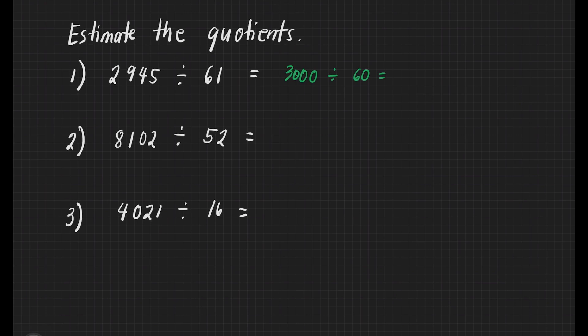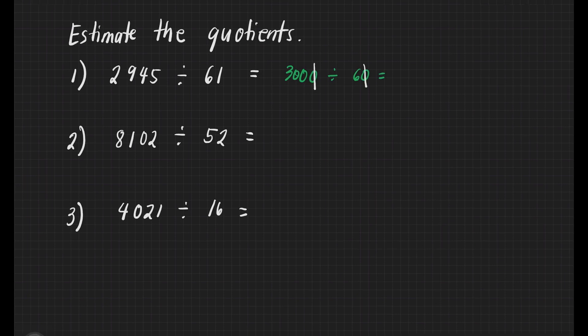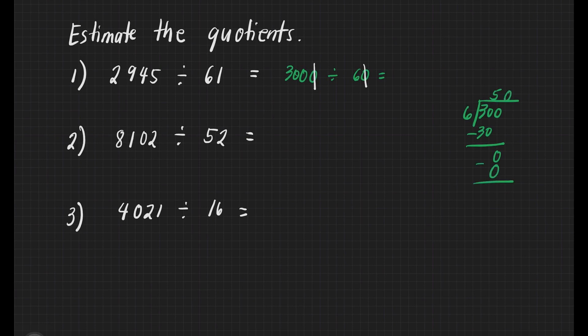We're ready to cancel some zeros: one zero from our dividend and one zero from our divisor. Then we're ready to divide. Let's show our solution: 300 divided by 6. How many 6s are there in 3? We move on to 30. How many 6s are there in 30? That's 5. 5 times 6 is 30. Subtract: 30 minus 30 is 0. Bring down 0. How many 6s in 0? That's 0. Our answer for number 1 is 50.